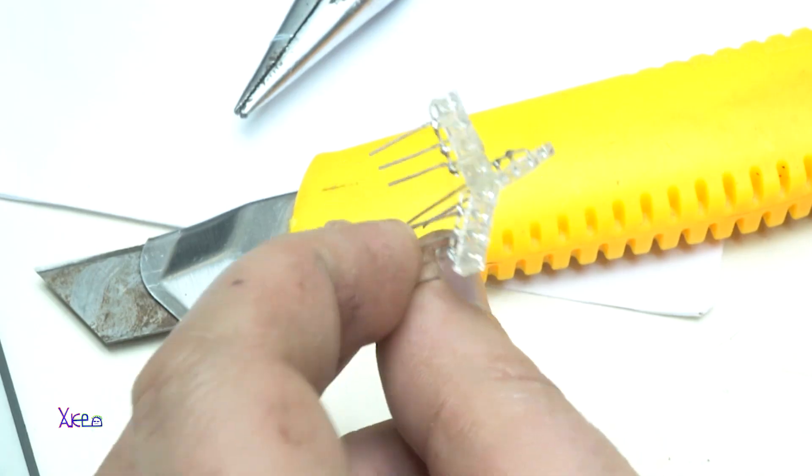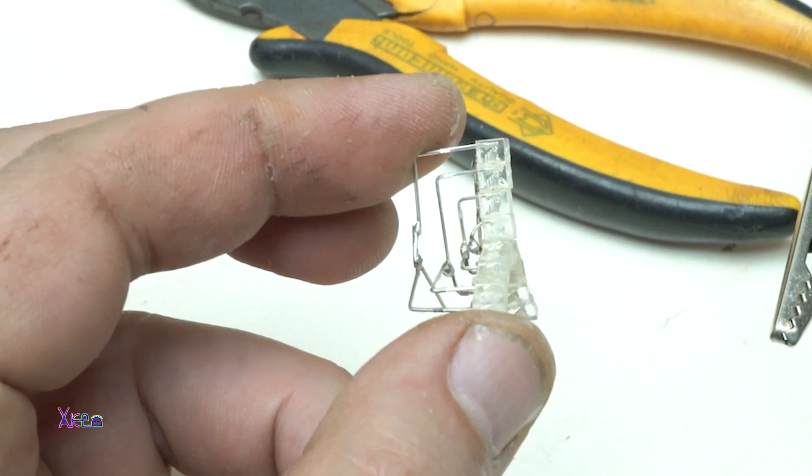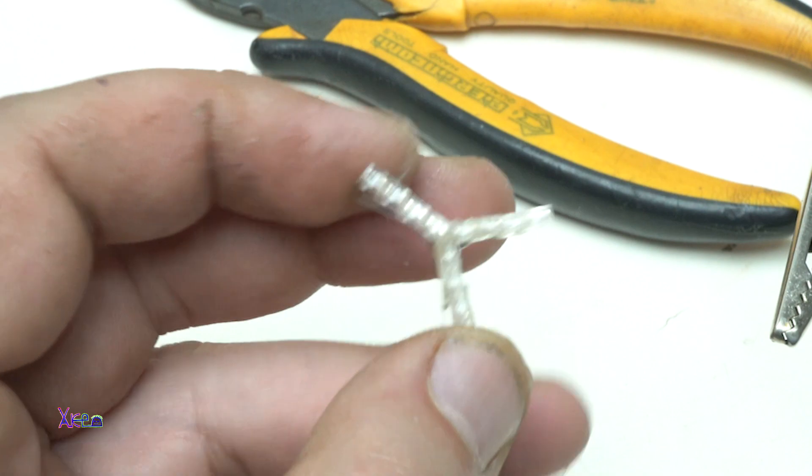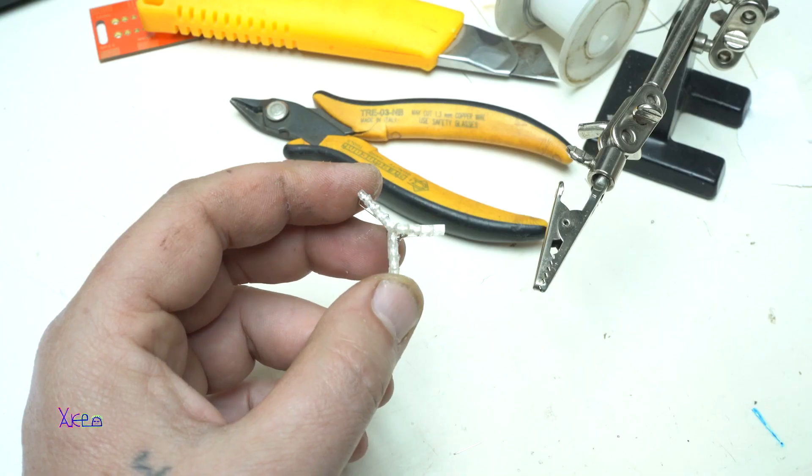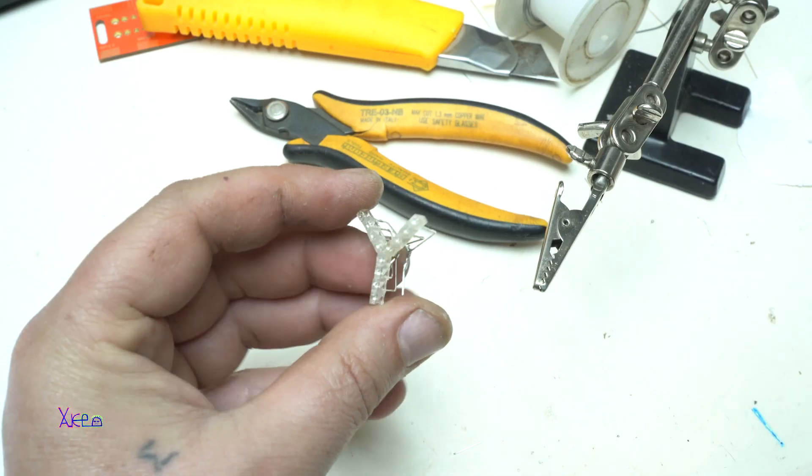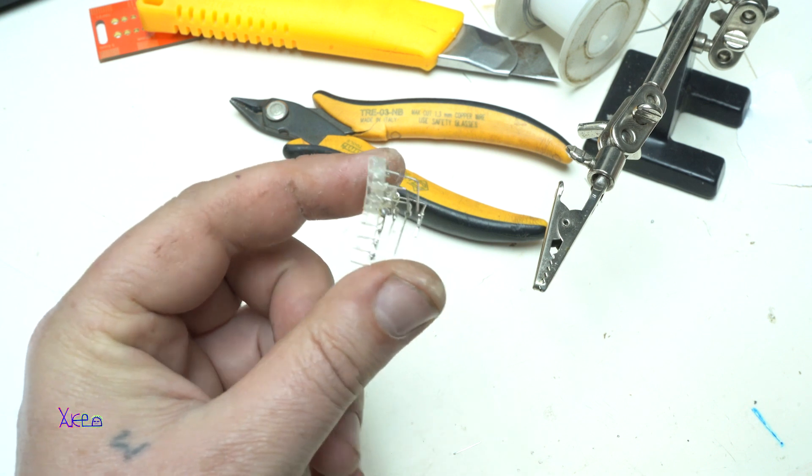For making the flux capacitor, we're gonna start from the 12 LEDs. With these 12 yellow LEDs, we're gonna make 3 rows by 4 LEDs and fix them with super glue.